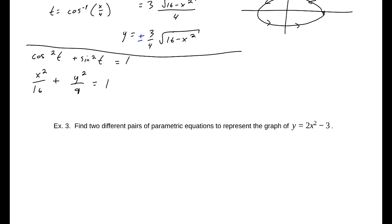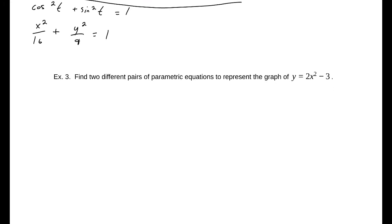For our last question, find two pairs of parametric equations to represent this graph. So y equals 2x squared minus 3. The easiest choice is x equals t, which would then make y equal to 2t squared minus 3. That is one way to write that as a set of parametric equations.